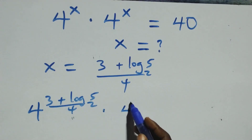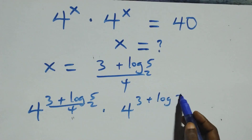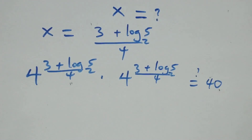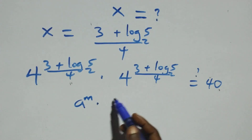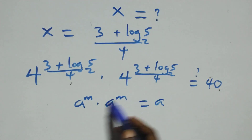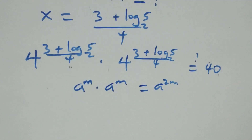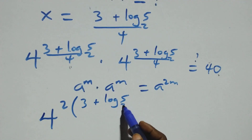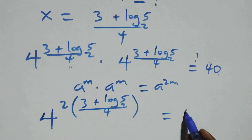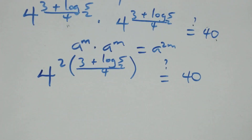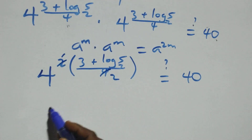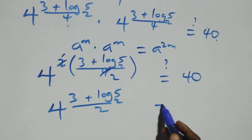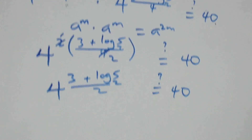Substituting, we have 4 raised to power (3 plus log base 2 of 5) over 4, times 4 raised to power (3 plus log base 2 of 5) over 4, equals 40. When we multiply same-base powers, a raised to m times a raised to m equals a raised to 2m. So we get 4 raised to power 2 times (3 plus log base 2 of 5) over 4, which simplifies to 4 raised to power (3 plus log base 2 of 5) over 2, equals 40.